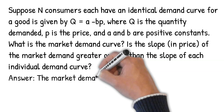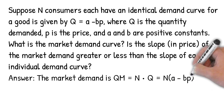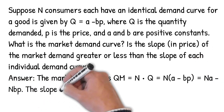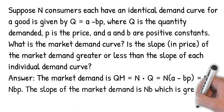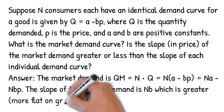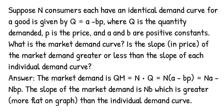The market demand is the horizontal sum of the individual demand. So the market demand is flatter than the individual demand.